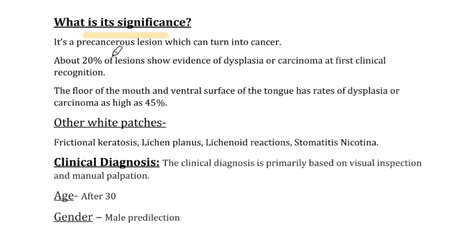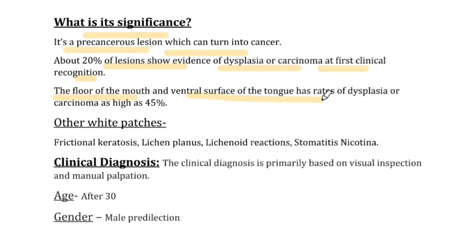What is its significance? It is a pre-cancerous lesion which can turn into cancer. About 20% of lesions show evidence of dysplasia and carcinoma at first clinical recognition. The floor of the mouth and ventral surface of the tongue have rates of dysplasia and carcinoma as high as 45%, so this location is very important.